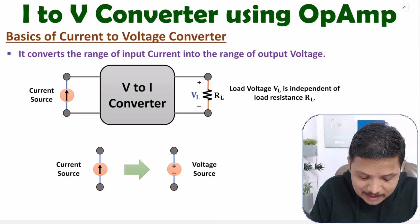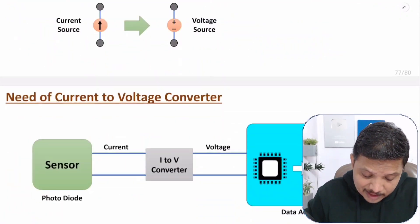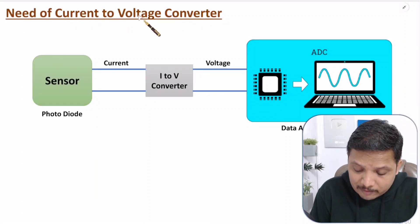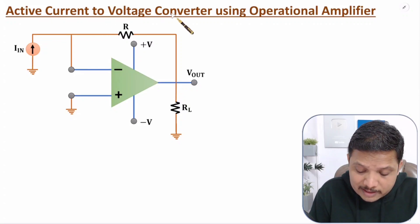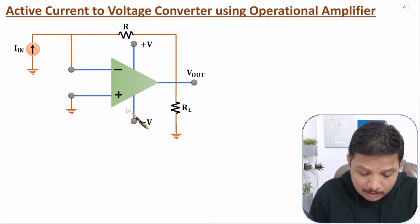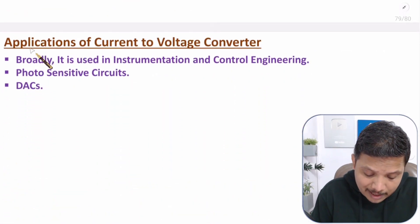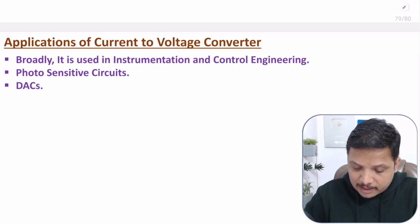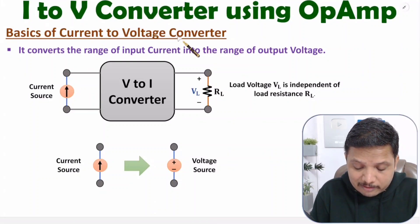First, I will be discussing the basics of the current-to-voltage converter, meaning the I2V converter. After that, I will explain what is the basic need of the I2V converter. Then I will explain the active current-to-voltage converter using an operational amplifier, where I will derive the current-to-voltage conversion. Finally, I will explain the applications of the current-to-voltage converter. So let us begin with the first agenda: basics of the I2V converter.